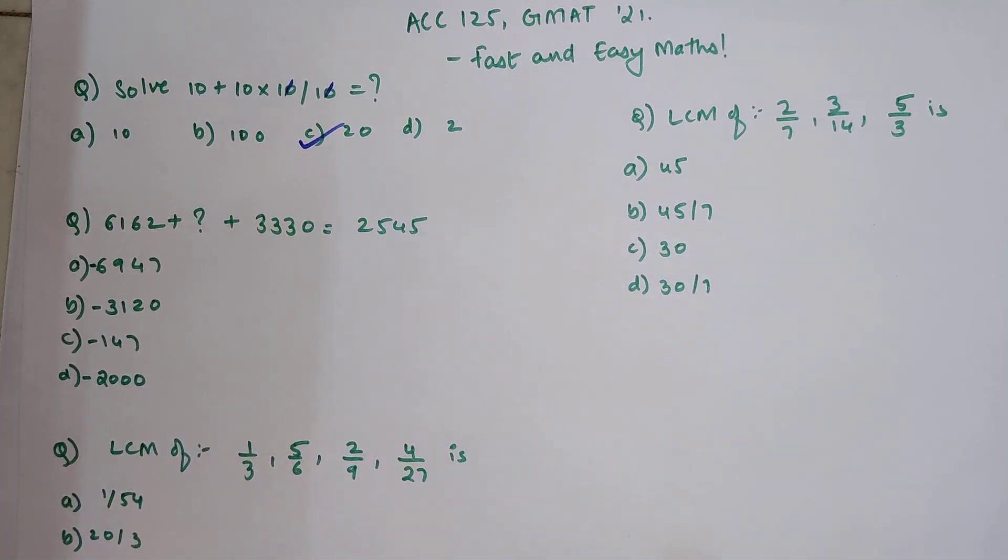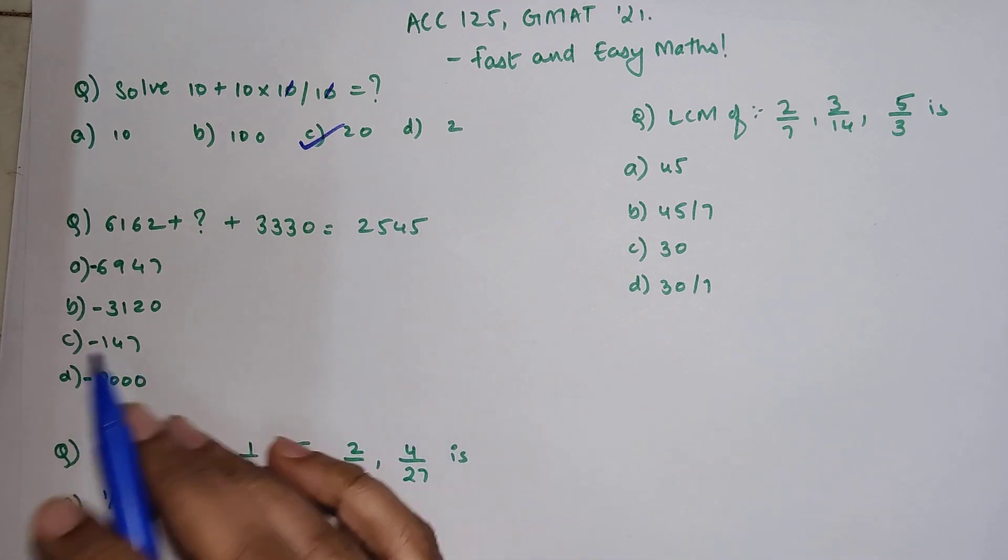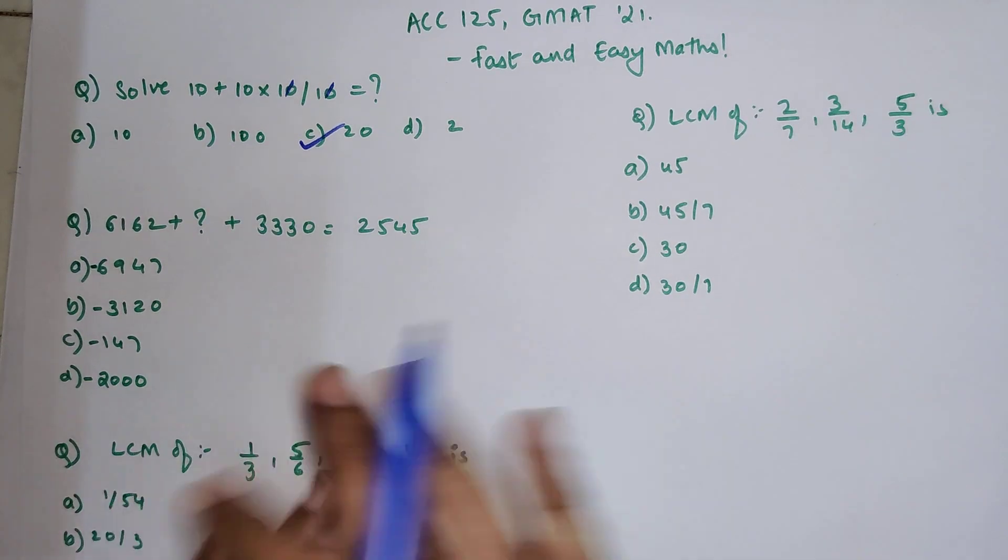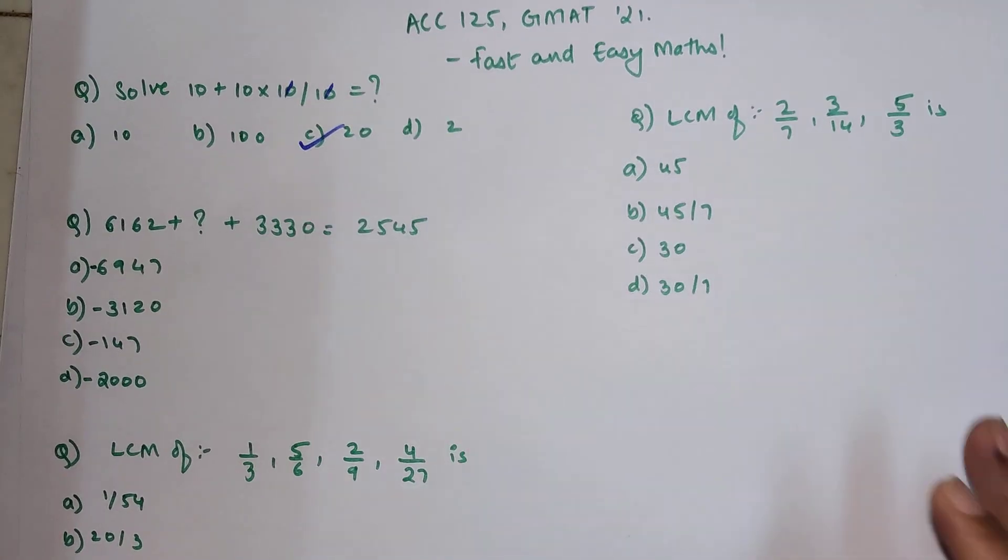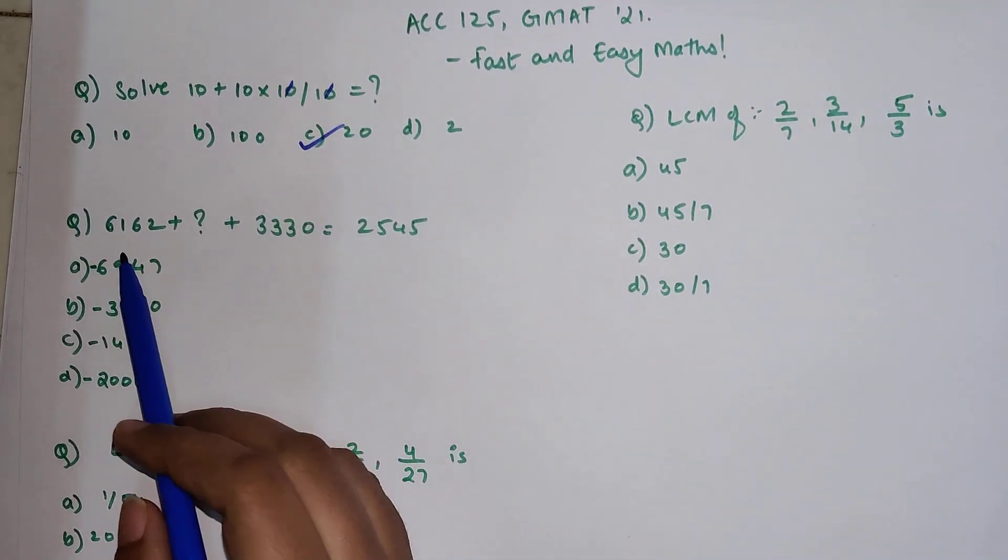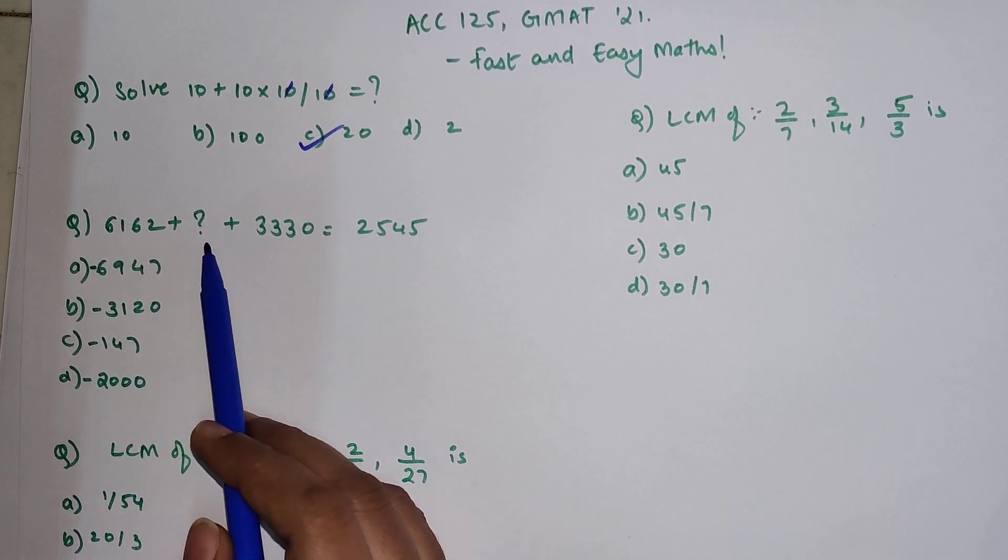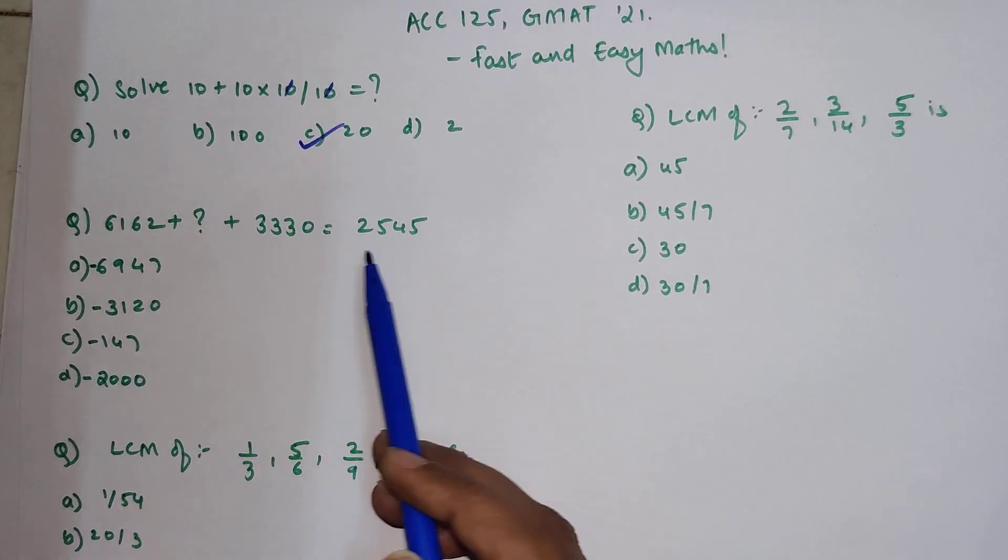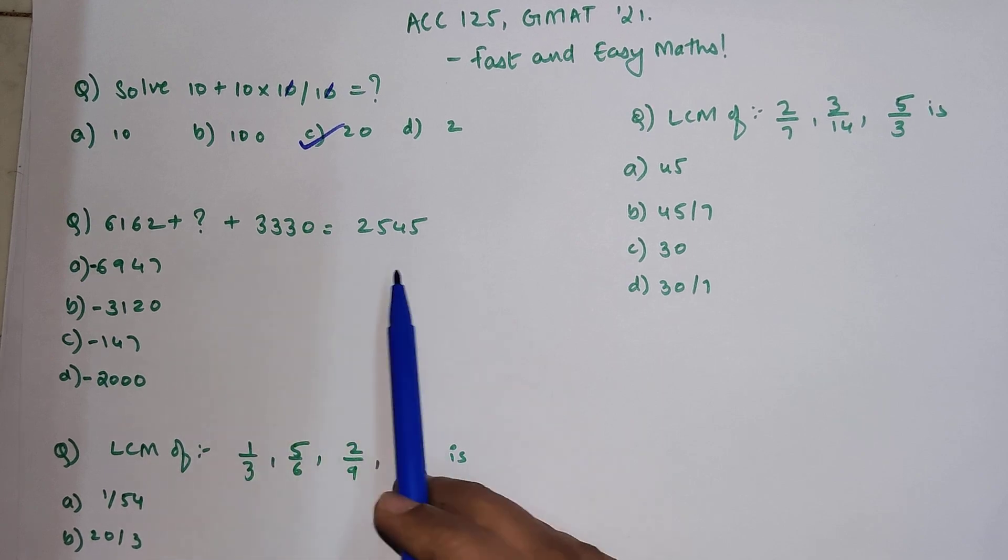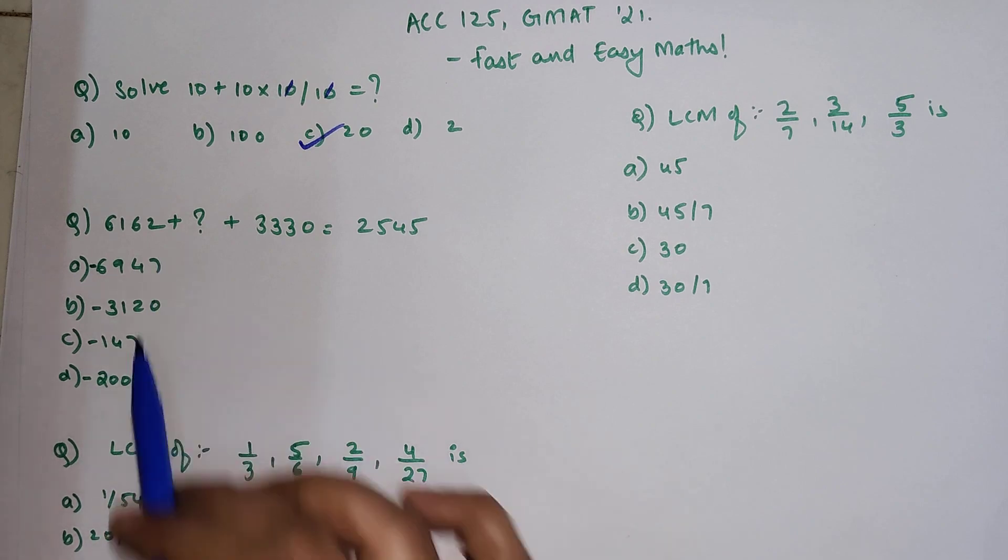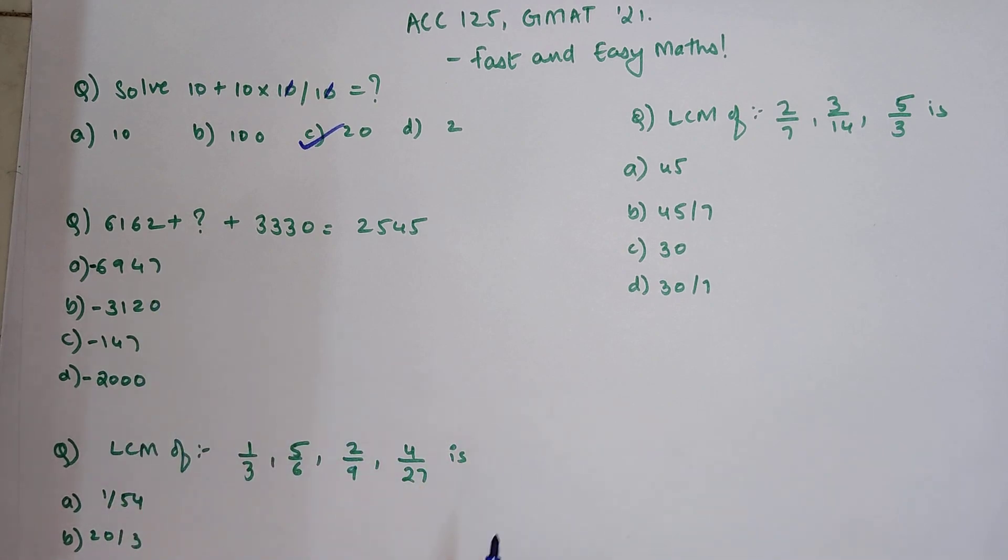So the next one over here, I am going to show you a super easy trick for this question. You will have to solve this or rather you can solve this without even doing one bit of calculation. So the question over here is if 6162 is added to something and then which is again added to 3330, you get the answer as 2545. Then what is this something or rather what is this question mark value?